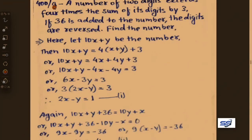Next verbal equation problem: a two-digit number exceeds 4 times the sum of its digits by 3. If 36 is added to the number, the digits are reversed. Find the number. Let 10x plus y be the number.